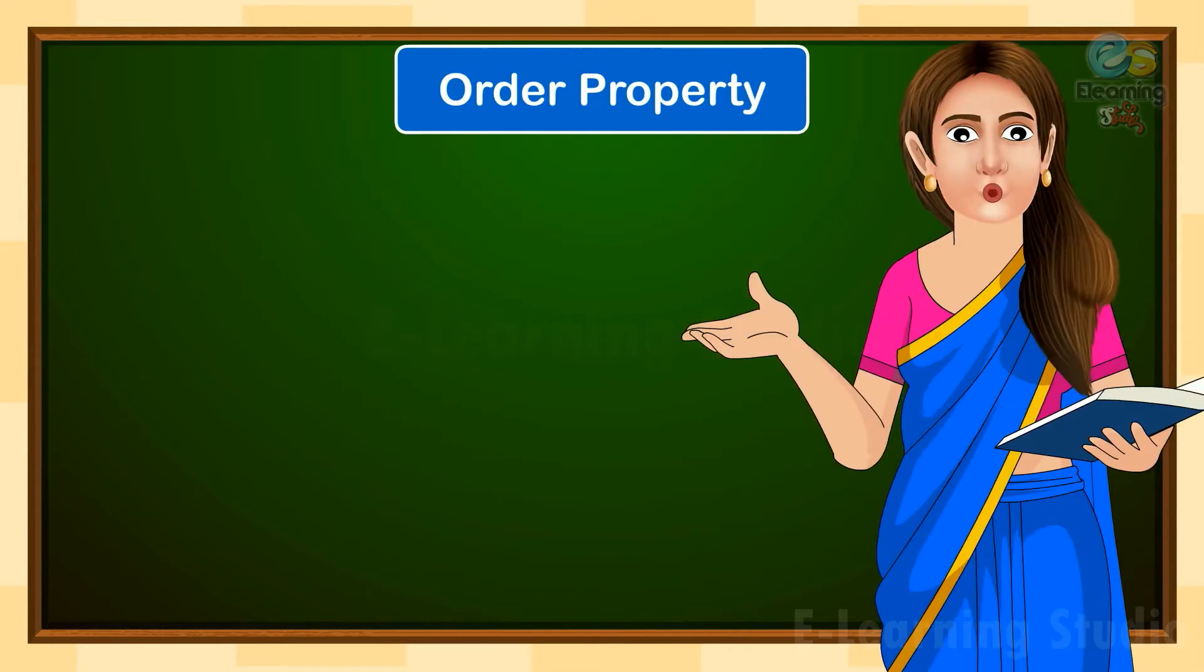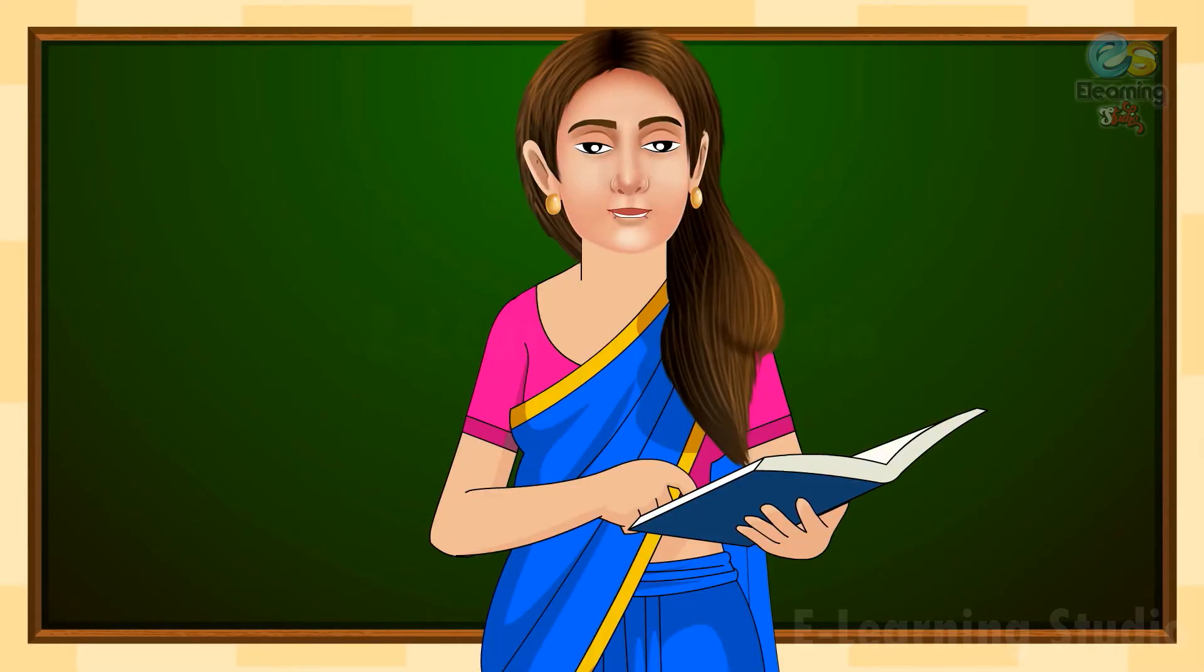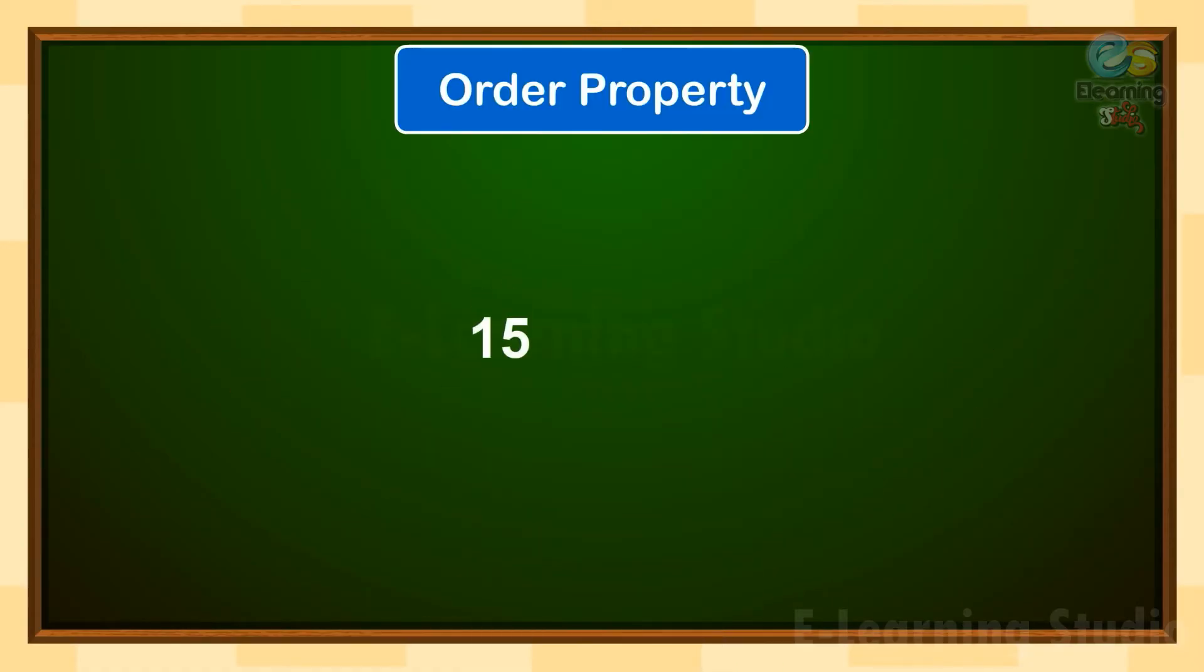Kids, in this property, the sum doesn't change even if we change the order of the numbers. Let's take an example to understand this Order Property. We have 15 plus 3 in this example and we know 15 and 3 are the addends. So, in the Order Property, we are going to only change the order of the addends. In short, 15 plus 3 is equal to 3 plus 15.